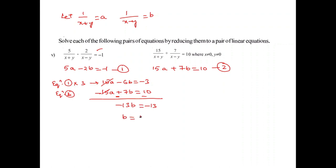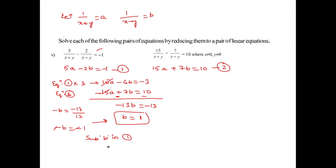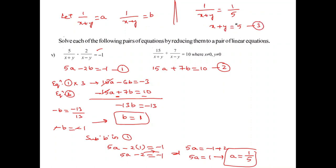So minus 13B equals minus 13, giving B equals 1. Substituting B equals 1 into equation 1: 5A minus 2 equals minus 1. Shifting: 5A equals minus 1 plus 2, so 5A equals 1, giving A equals 1 by 5. Substituting B gives x minus y equals 1 (equation 4).